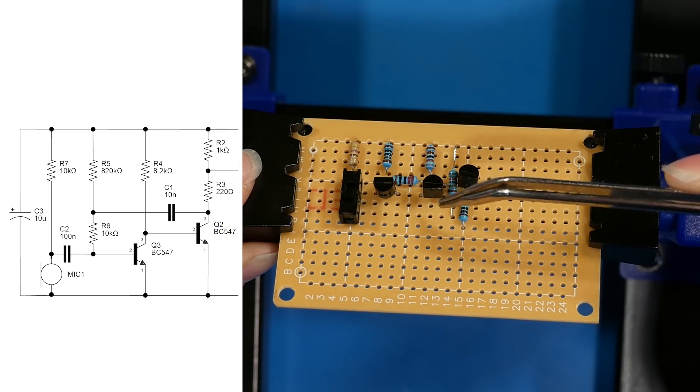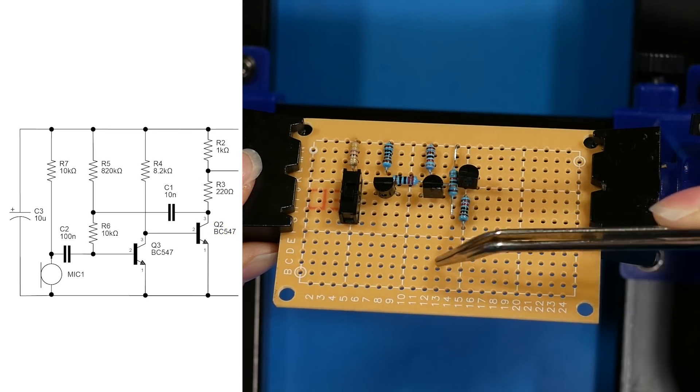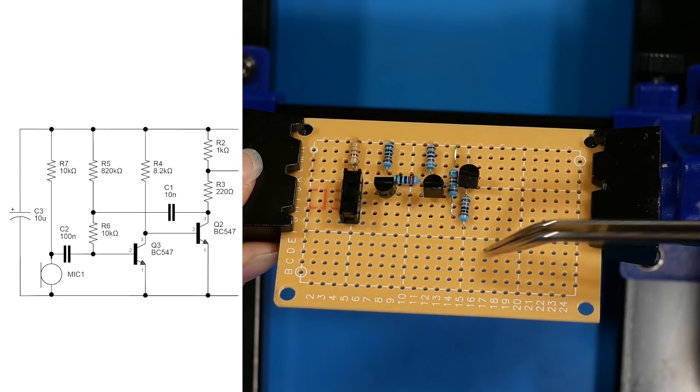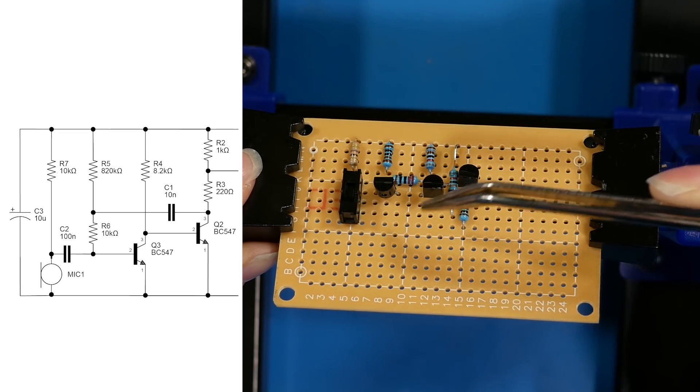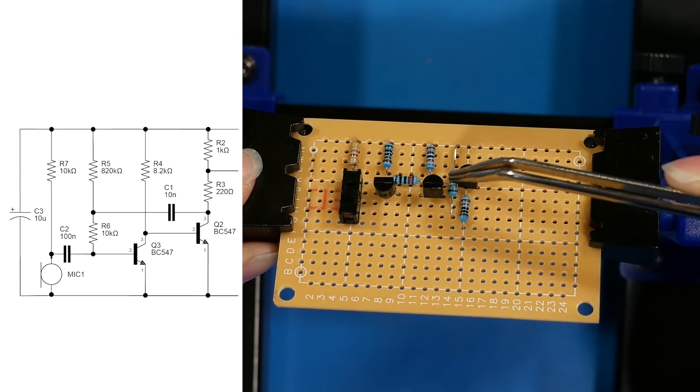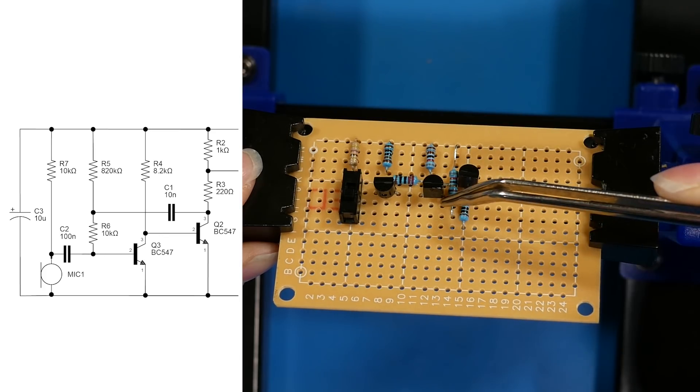Now, because the emitter pin of Q2 is going to have to come all the way down to get to what's going to be our ground plane that's going to go on along the bottom, I want to make sure that my capacitor and my resistor pins aren't going to interfere with that.